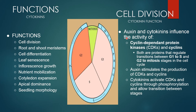When it comes to cell division, auxin and cytokinins influence the activity of cyclin dependent protein kinase. Both of these proteins regulate the G1 to S phase and G2 to mitosis stage in the cell cycle. Auxin stimulates the production of cytokinins; cytokinins stimulate the production of CDKs and cyclin through phosphorylation and allow transcription between stages.